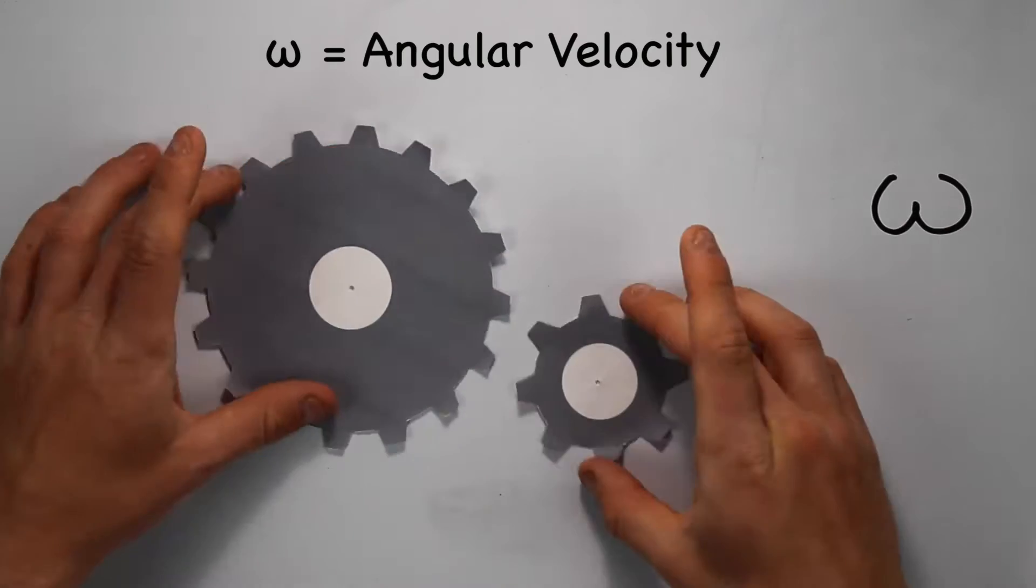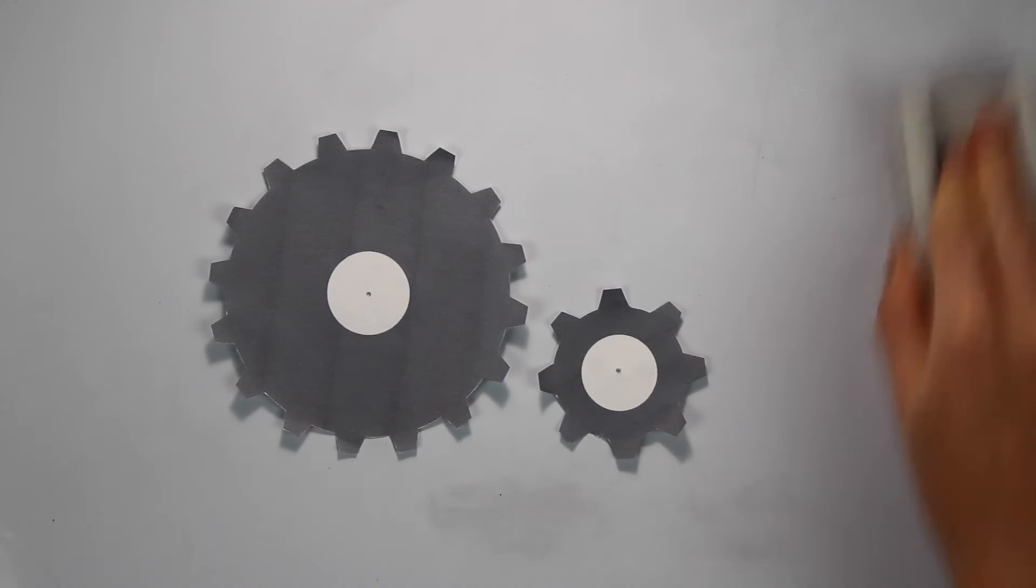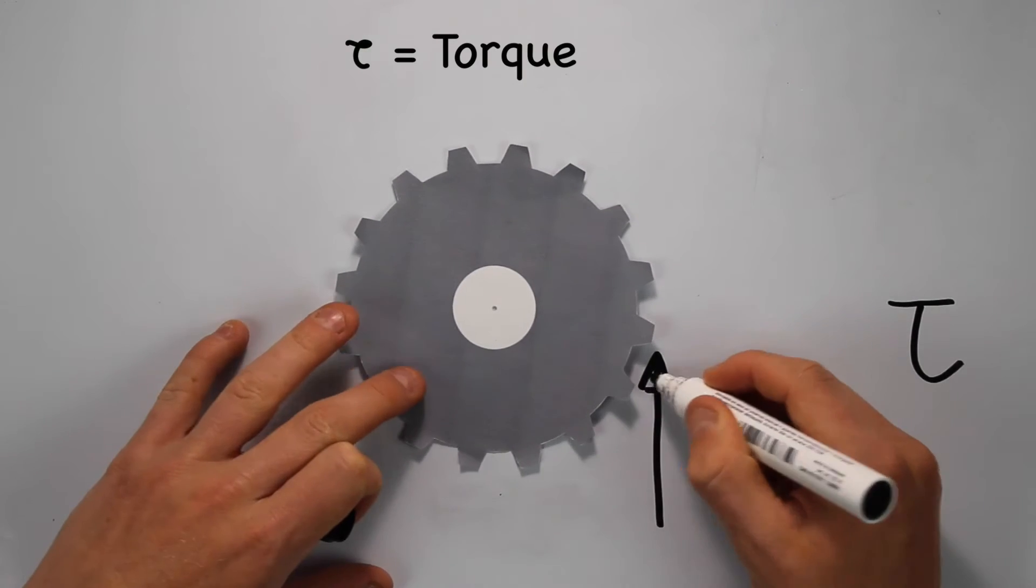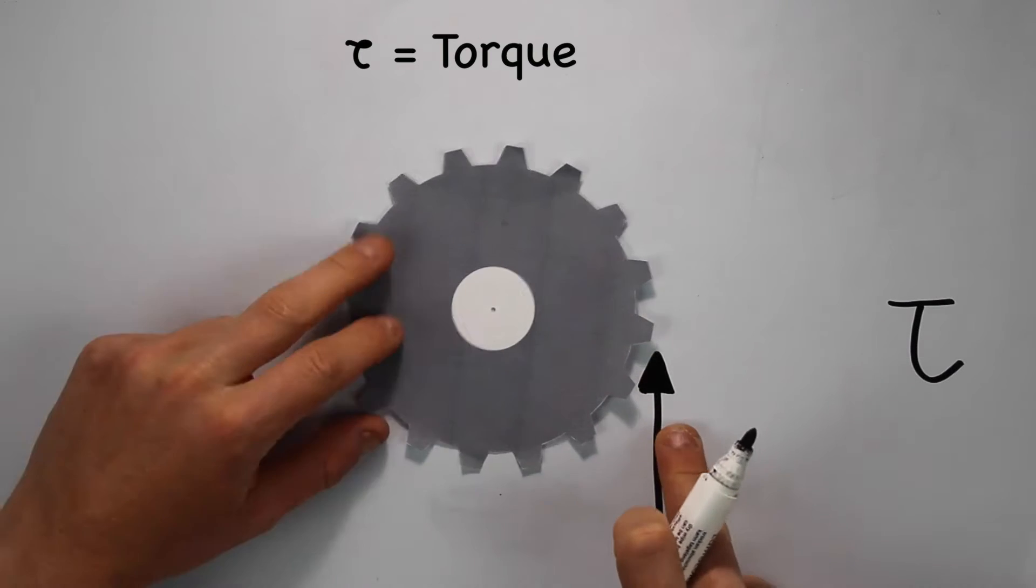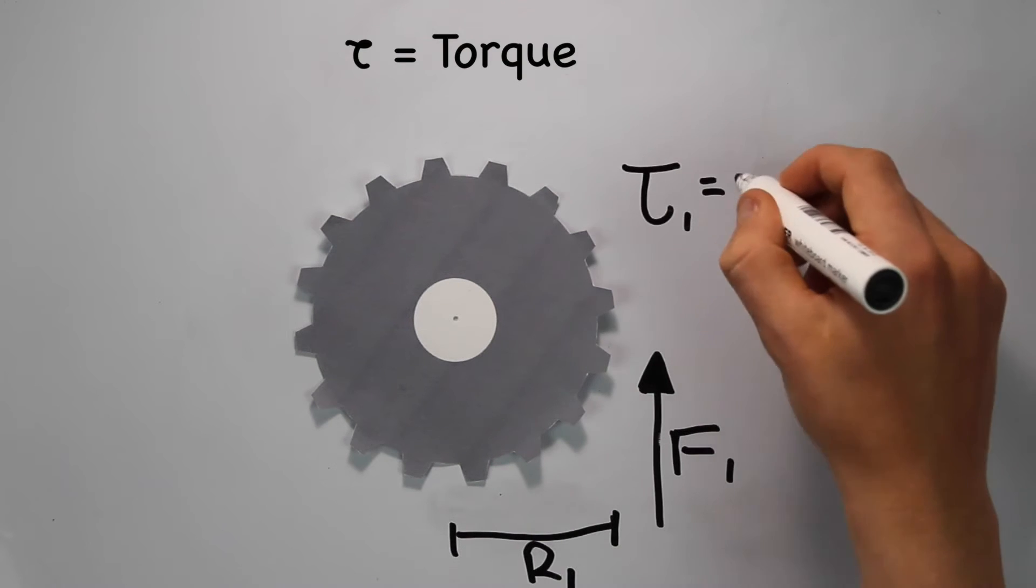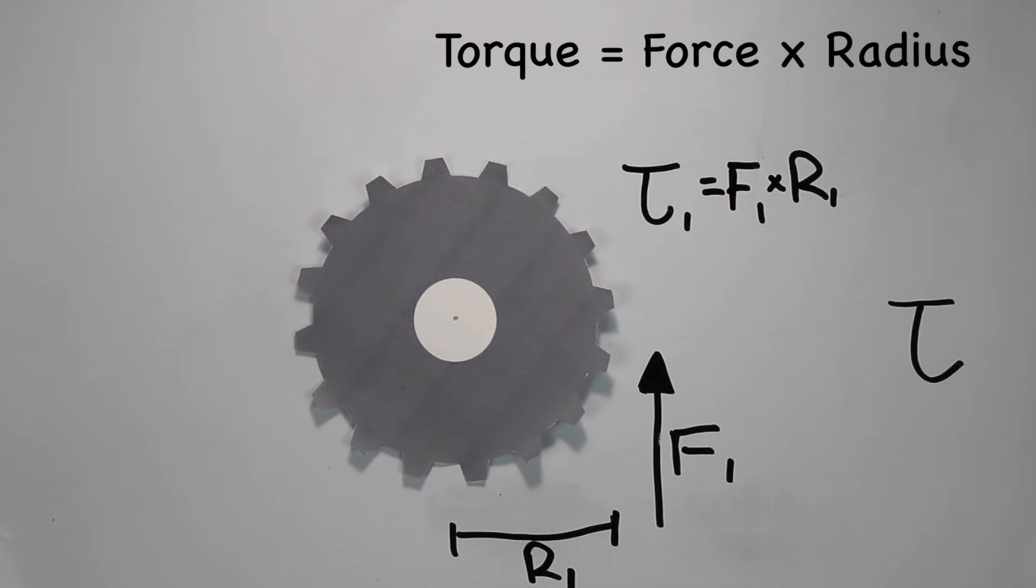The angular velocity is how fast a particular gear spins. Torque is the amount of force that causes an object to rotate. For example, if I were to push here on this gear with a certain amount of force, at a point that is a radius of length away from the gear's point of rotation, I have created a torque on the gear which is equal to that force multiplied by that radius.